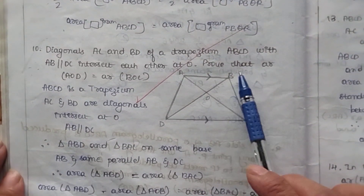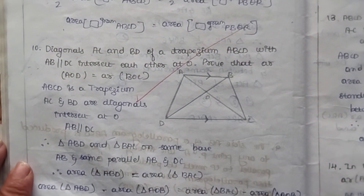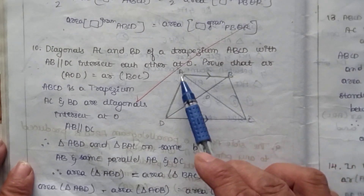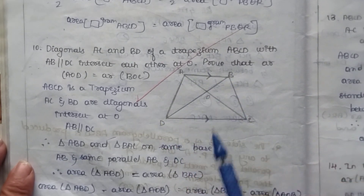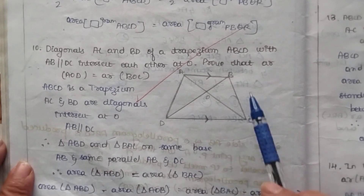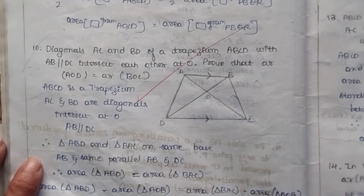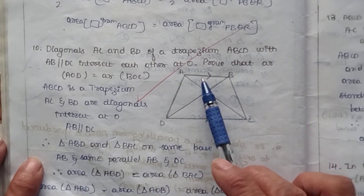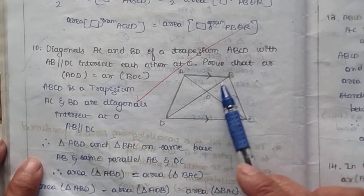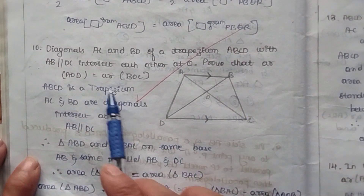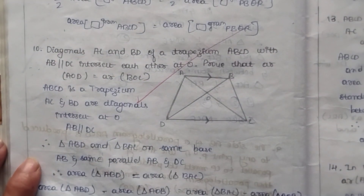From triangle ABD, if we remove the small common triangle AOB, what is left is triangle AOD. Similarly, from triangle BAC, if we remove the same small triangle AOB, what remains is triangle BOC. Therefore, area of AOD is equal to area of BOC. Hence proved.